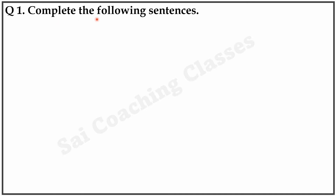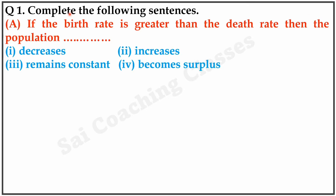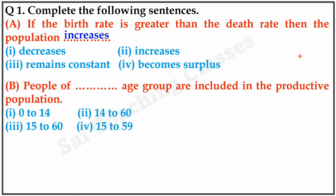Question 1: Complete the following sentences. A. If the birth rate is greater than the death rate, then the population — Answer: increases. B. People of the 15 to 59 age group are included in the productive population.